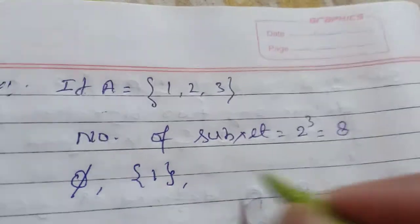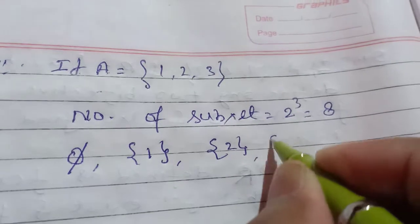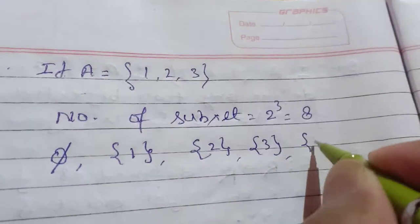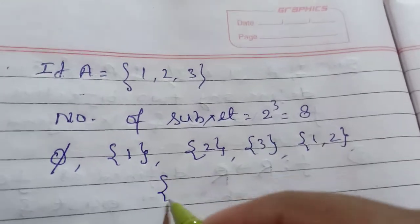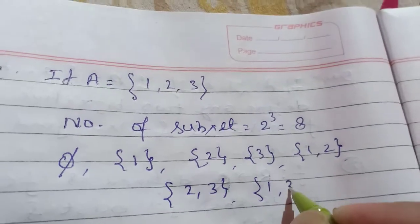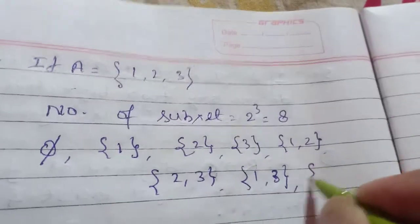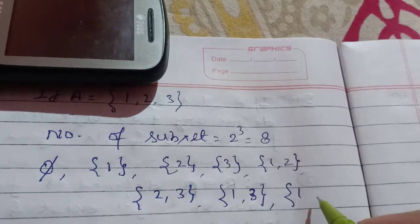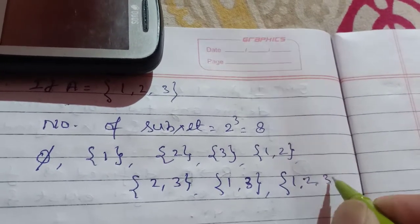Therefore the subsets are: phi (empty set), {1}, {2}, {3}, {1,2}, {2,3}, {1,3}, and {1,2,3}.